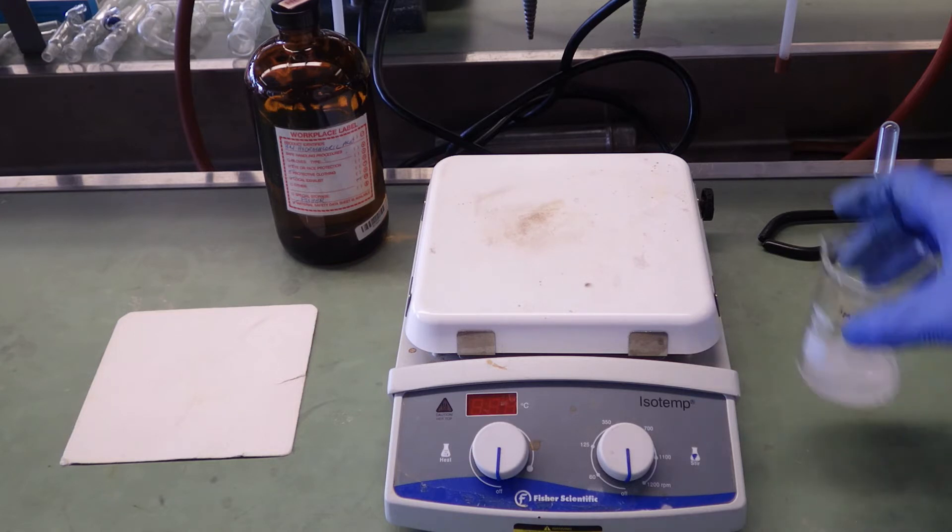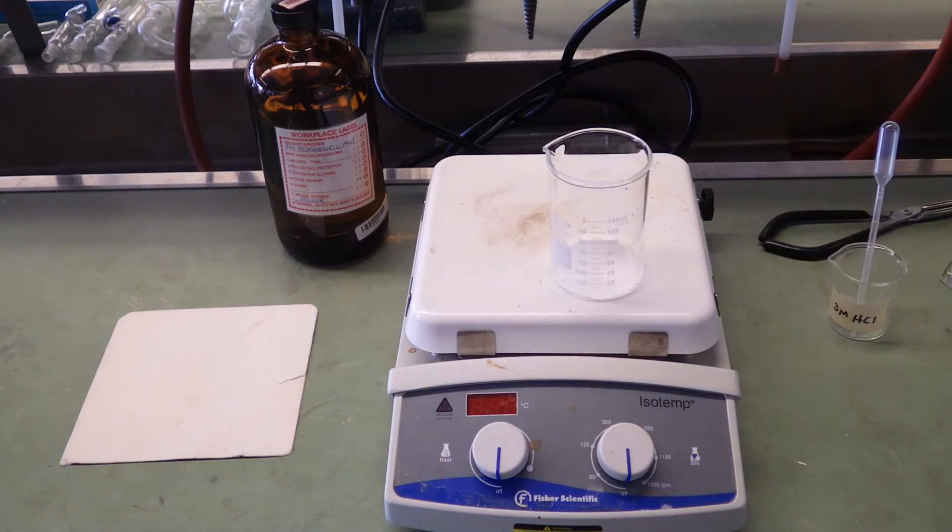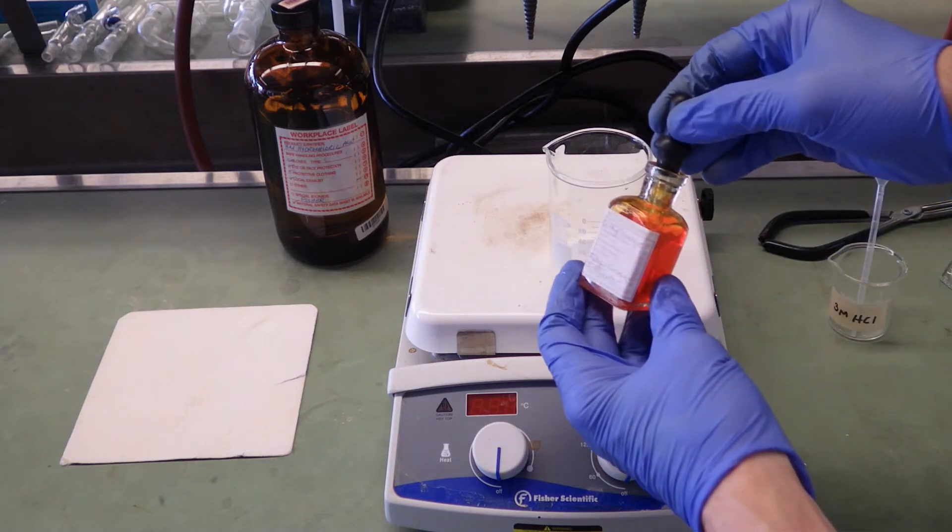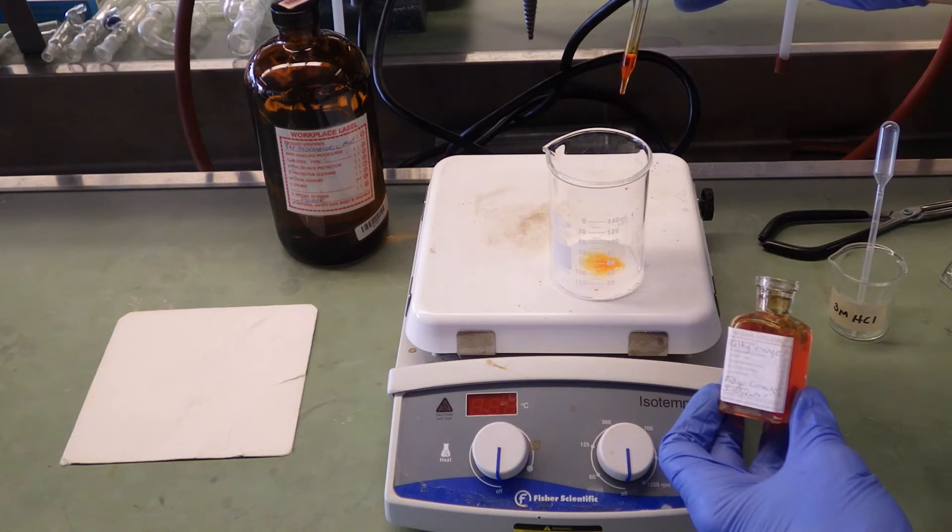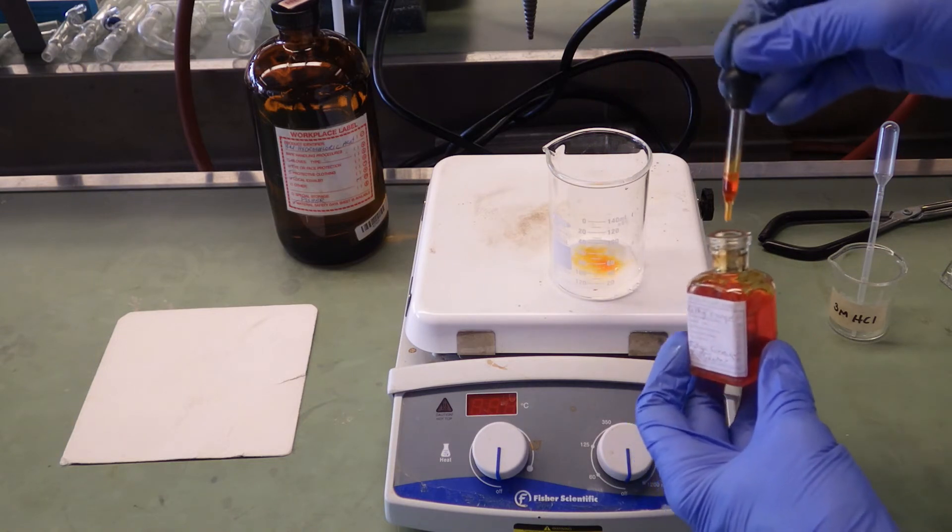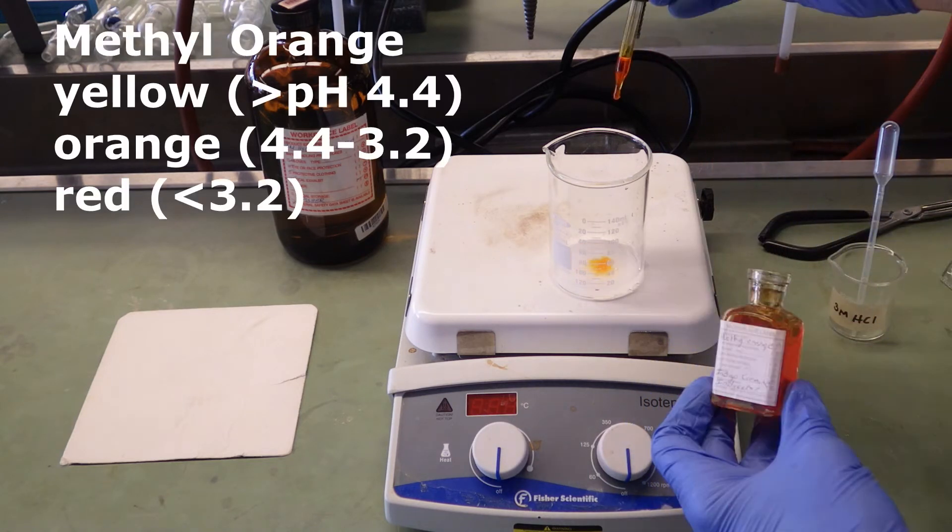Next, I'm adding a pH indicator. Methyl orange. Methyl orange is yellow at a pH greater than 4.4. It's orange between 4.4 and 3.2. And it's red when the pH is less than 3.2.